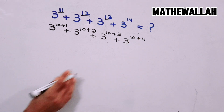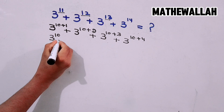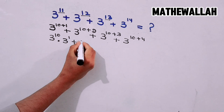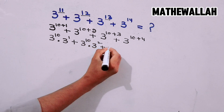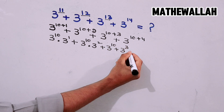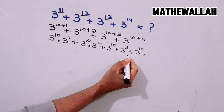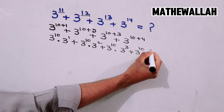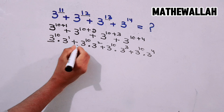Now we rewrite each term using the product of powers rule: 3 power 10 into 3 power 1, plus 3 power 10 into 3 power 2, plus 3 power 10 into 3 power 3, plus 3 power 10 into 3 power 4.